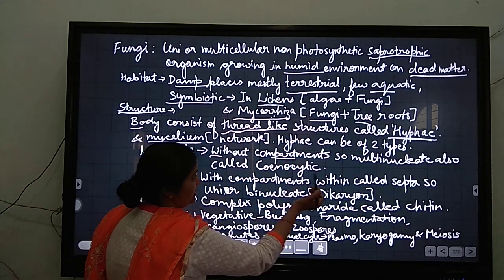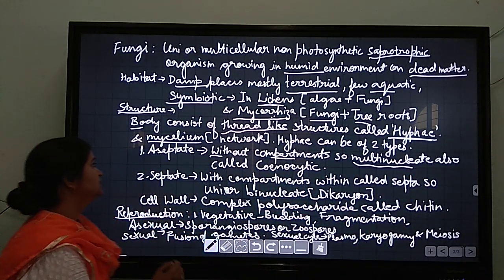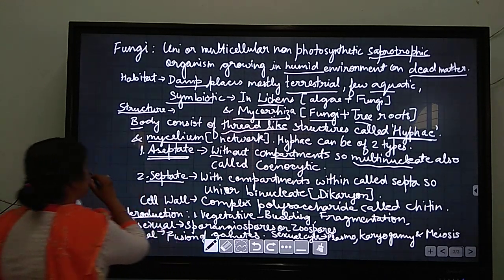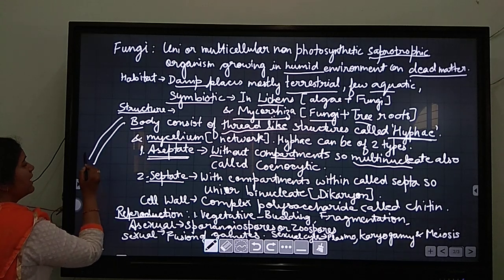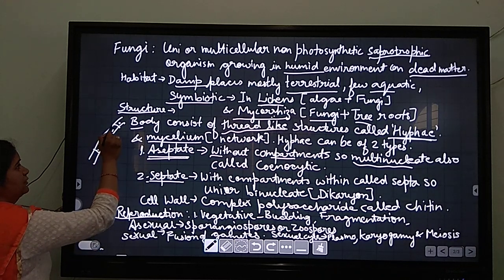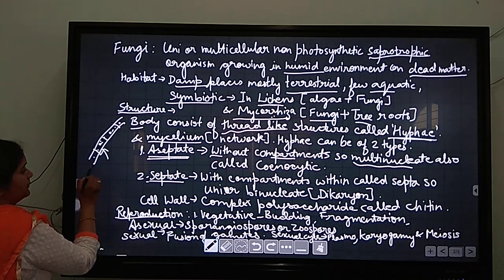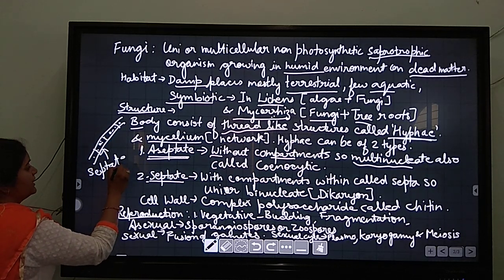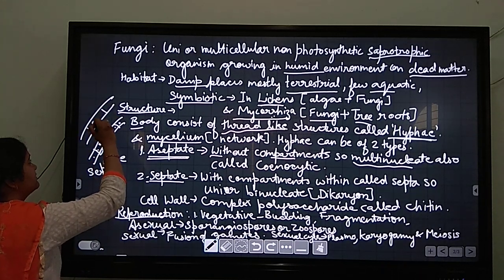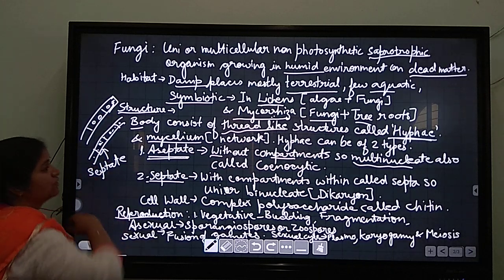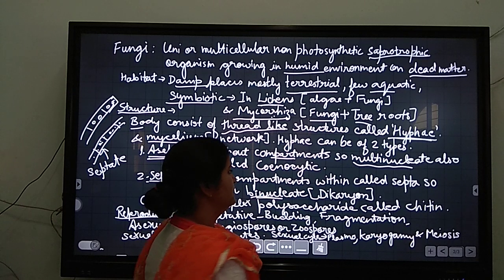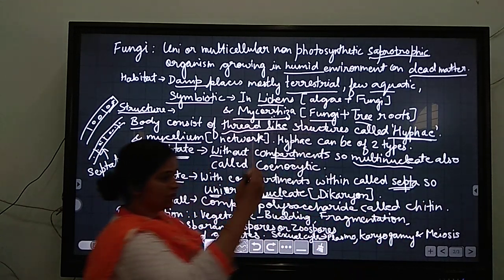Now hyphae can be two types. Without compartment means without separation, so it will be multinucleate. This type of hyphae will be known as aseptate hyphae. And if the hyphae is having separation, with compartments and only single nucleus is present with other organelles and cytoplasm, this kind of hyphae having separation is known as septate hyphae. Septate hyphae can be uninucleate or binucleate. In some fungi there are two nuclei in each septa. Separation is known as septa.